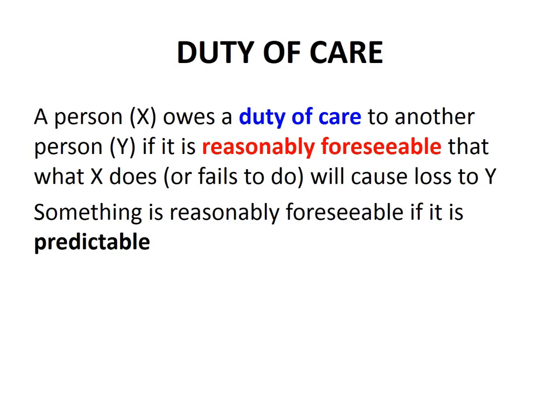The first element of negligence is that the defendant must owe a duty of care to the plaintiff. A person X owes a duty of care to another person Y if it is reasonably foreseeable that what X does or fails to do will cause loss to Y. Something is reasonably foreseeable if it is predictable. Look down the left-hand side of your vocabulary sheets, find the term duty of care, write this definition in there, and please highlight the words in red bold type — that is, the words 'reasonably foreseeable'.